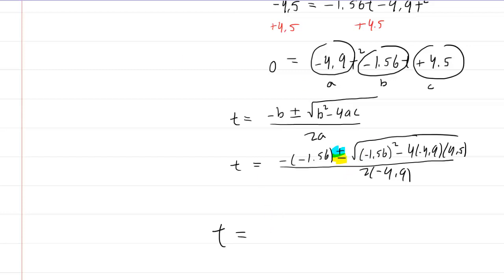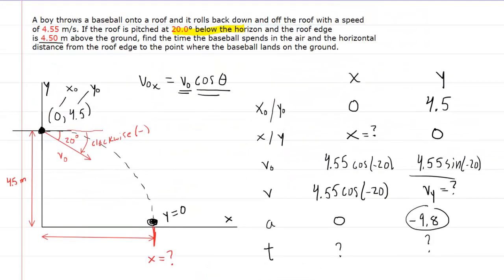And so you will end up with negative 1.13 seconds as well as positive 0.81 seconds. Of course, time cannot be negative in this context. So the correct answer for the amount of time that the ball will spend in the air is the 0.81 seconds. And that was indeed one of the items that they asked us to find was the time that the baseball spends in the air. So we've got that.